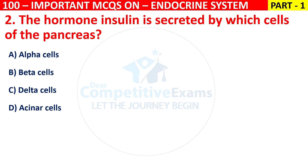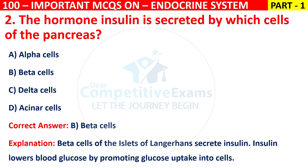The correct answer is B, that is beta cells. The beta cells of the islets of Langerhans secrete insulin. Insulin lowers blood glucose by promoting glucose uptake into cells.